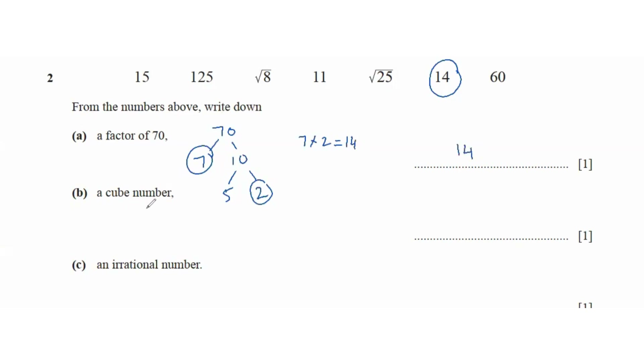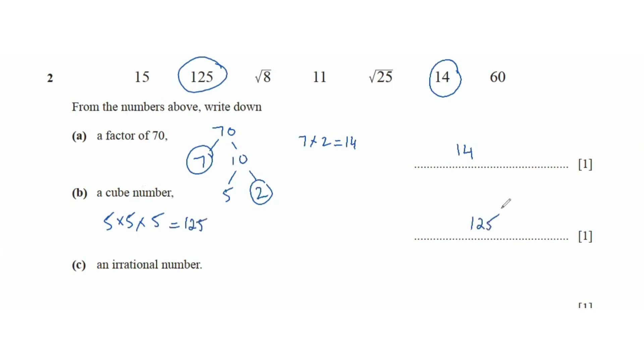Then a cube number. 125 is 5 times 5 times 5, so this is our cube number.